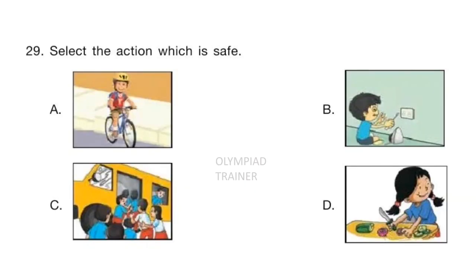Question 29: Select the action which is safe. Look at the pictures carefully. Answer is option A. In option A, a boy is cycling with a helmet. In option B, a boy is playing with a switchboard. In option C, kids are pushing each other while entering the bus. In option D, a girl is playing with a knife. So B, C, and D are not safe for kids. Option A is the answer.